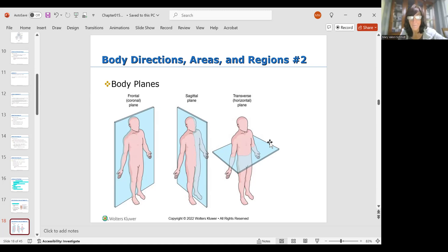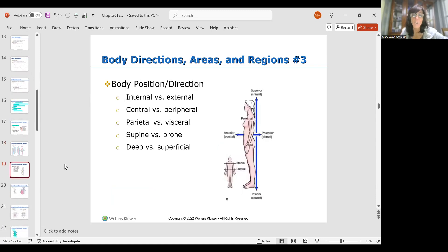Body directions, areas and regions. Let's talk about body position. Things are either internal or external, they are either central which is close to the core or peripheral farther away from the trunk, the trunk or the torso. Parietal versus visceral: visceral is deep, parietal is more superficial. Supine versus prone: supine is lying on your back, prone is lying on your stomach, and deep versus superficial, pretty self-explanatory.